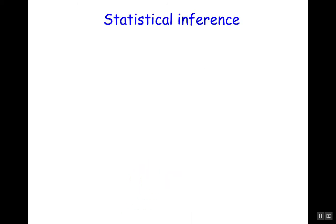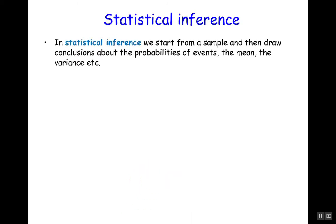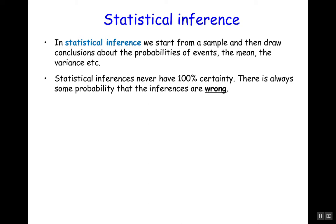So what do we do in statistical inference? We start from a sample and then we draw conclusions about the probabilities of events, or the mean or the variance that underlie the sample. Statistical inferences can never be 100% certain. There is always a possibility that the sample we got is atypical and therefore the inference is wrong.